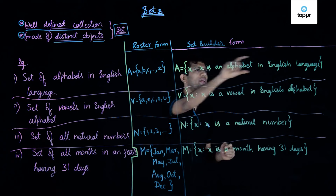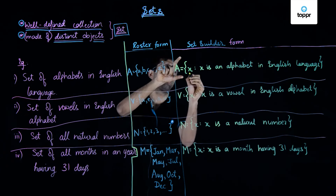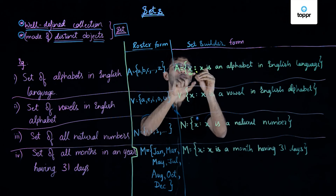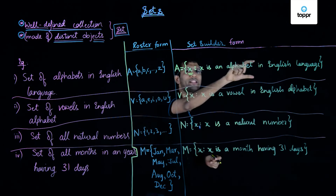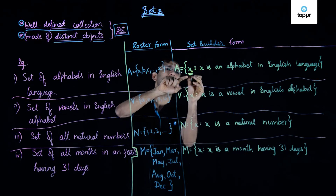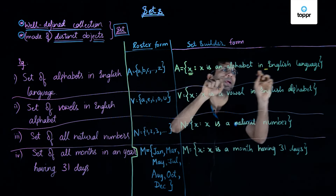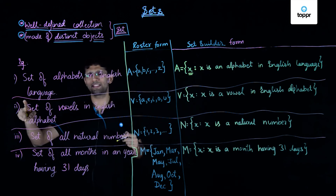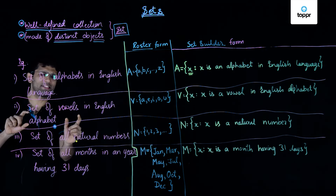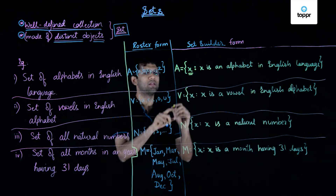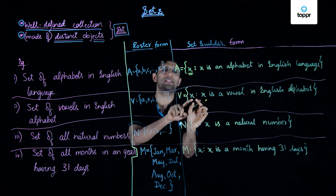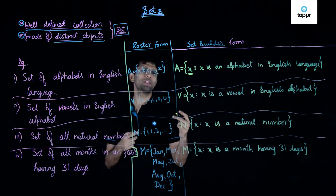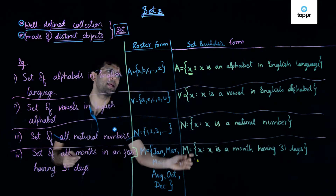In the set builder form, set A is written as containing all elements x, where this colon symbol is read as 'such that'. So the entire statement reads: A is a set containing all elements x such that x is an alphabet in the English language. Similarly, the set of all vowels in the English alphabet can be written as capital V consisting of all elements x such that x is a vowel in the English alphabet. In a similar manner, you can write the set of natural numbers and set M in the set builder form as well.